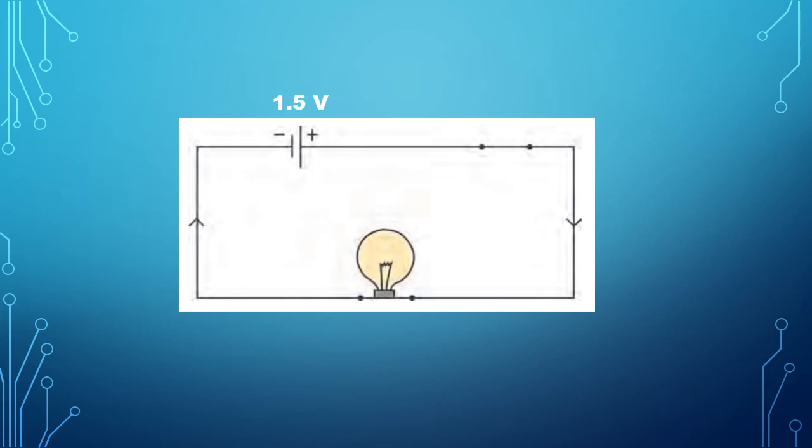Electrons in the wire flow due to the potential difference between the two ends of the dry cell. These flow from the negative terminal of the cell to the positive terminal of the cell. Conventional current flows in the opposite direction and is shown in the figure by the sign of an arrow. We will learn about an electrical circuit later in the lesson.